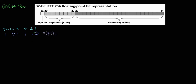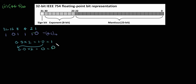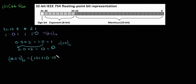Now let's convert 0.5 to binary. 0.5 times 2 equals 1.0 — we consider the integer value 1. Then 0.0 times 2 is 0. So 0.5 in binary is 0.1. Therefore 46.5 base 10 equals 101110.1 base 2.